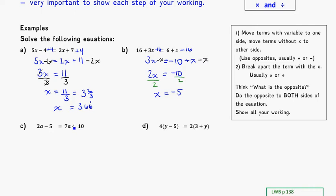I'm going to do it differently this time. I've moved numbers to the right every time, but I can see that 2a is smaller than 7a, so I might actually move the 2a over to join the bigger number. So the first thing I'll do is move the 10 to the other side. The opposite of plus 10 is minus 10, so I'm going to minus 10 from both sides. Minus 5 minus 10 is a total of negative 15, there's still the 2a, and this is now equal to 7a because plus 10 minus 10 cancel.